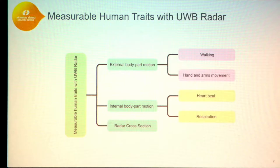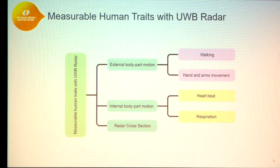There are different human traits measurable with ultra-wideband radar. We can measure the radar cross-section of the human, or we can measure external body part motion such as walking, hand, and arm movements, or involuntary movement of internal body parts such as heartbeat or respiration activities.